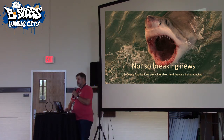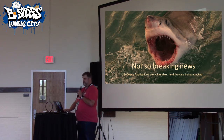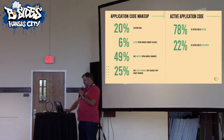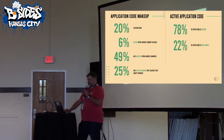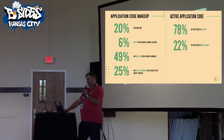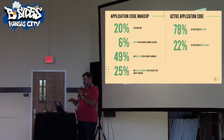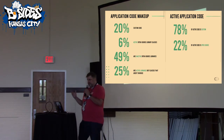Our apps are vulnerable. We have lots of them out there, we have a lot of software, and they're all under attack. That should not be a surprise to any of us. I want to talk about application code makeup. About 20% of it is custom code — that's the code our developers are writing and not pulling from somewhere else. 6% of it is active open source library classes — we're actually using that code from the libraries we're pulling in.